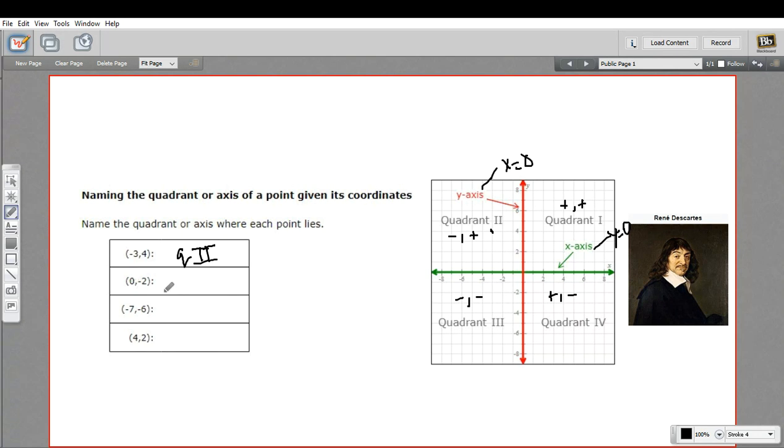Now zero, two. Here we have x equals zero. So that has got to be on the y-axis. Let's just plot it just to make sure. So x of zero, y of negative two would be right there. Yeah, that's on the y-axis.